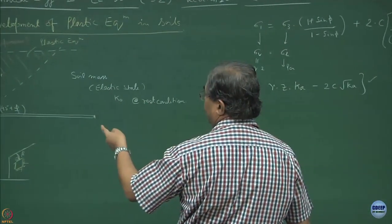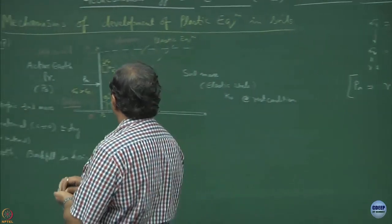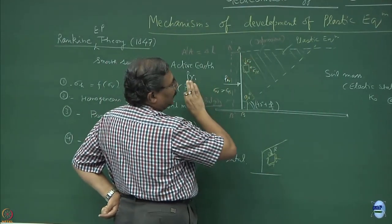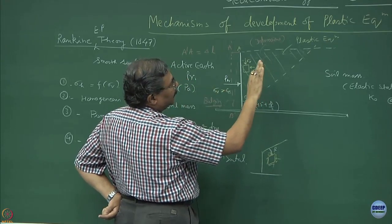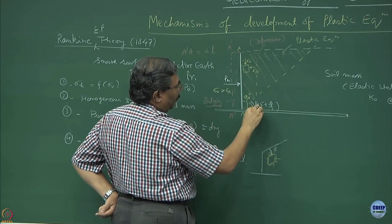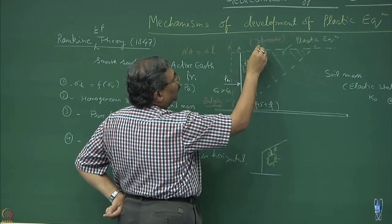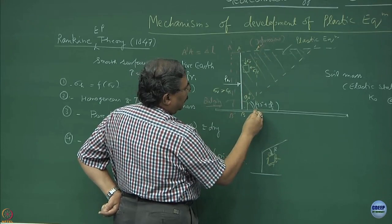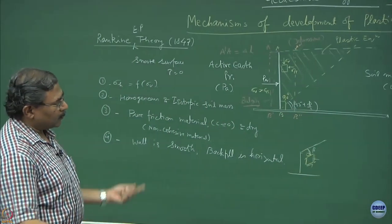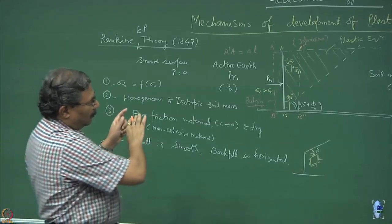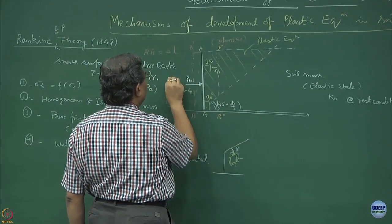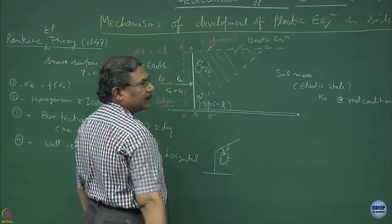There could be a second situation where the movement of the wall is inside. It may so happen that the wall moves in to position A-double-prime B-double-prime. As we saw yesterday, once the wall moves into the backfill, this becomes PP — passive earth pressure.